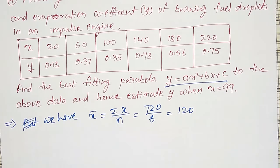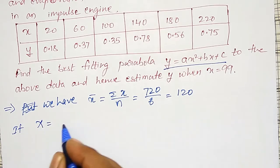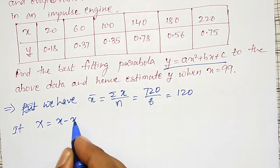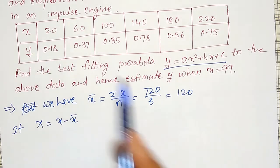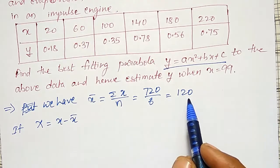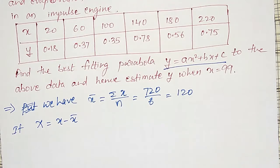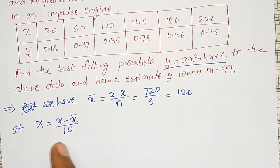If capital X = x − x̄, the deviation will become 20 − 120, giving values in terms of 100. To avoid large numbers, I will put capital X = (x − 120) / 10, so that it gives easy numbers for calculation.